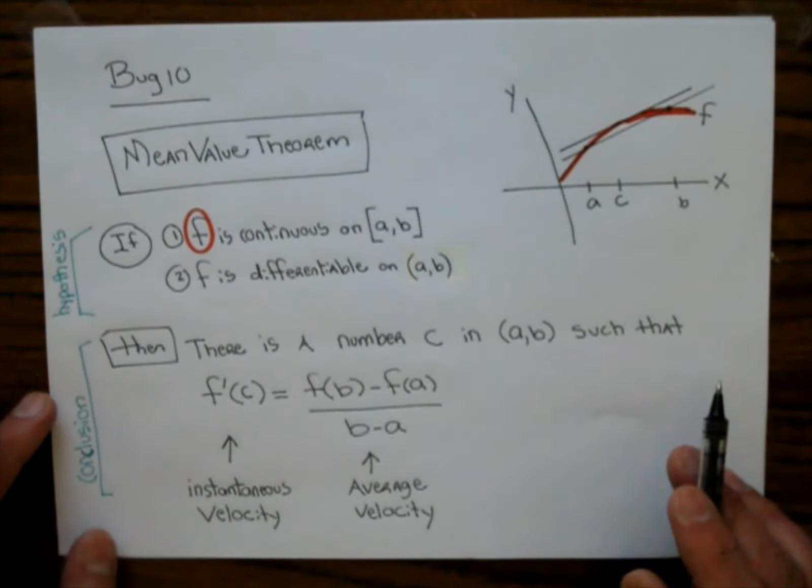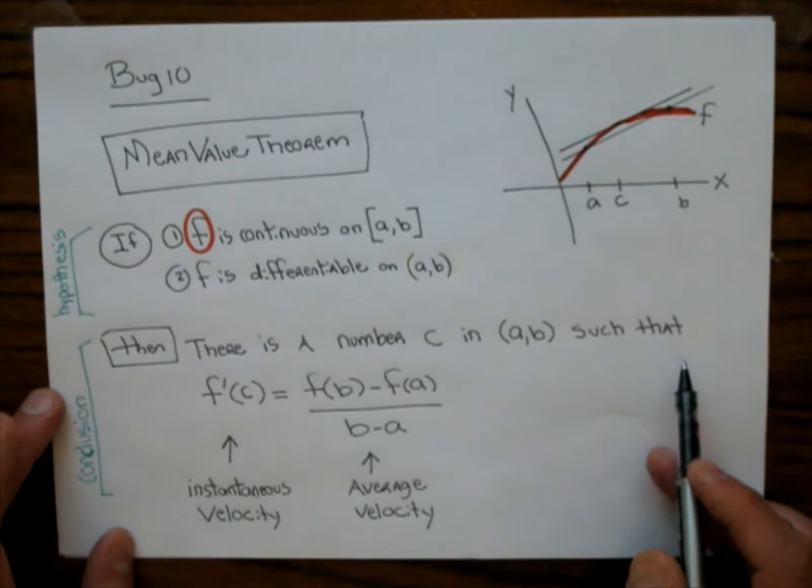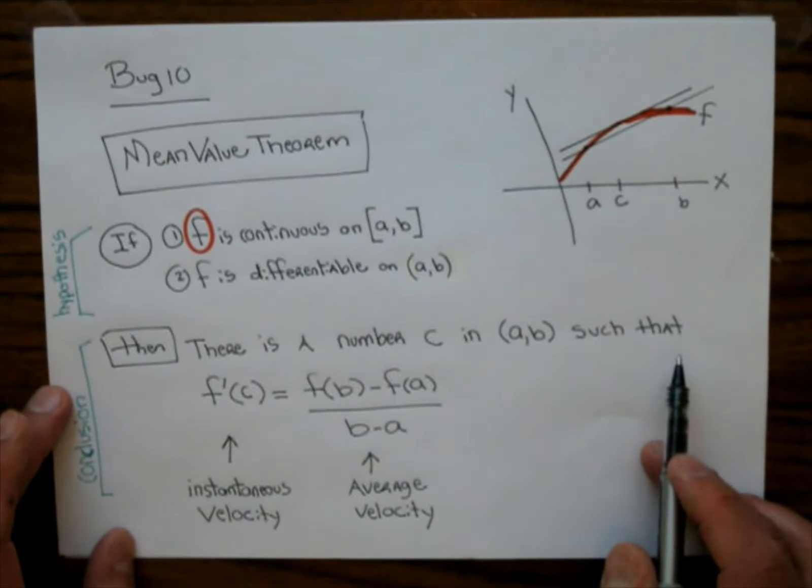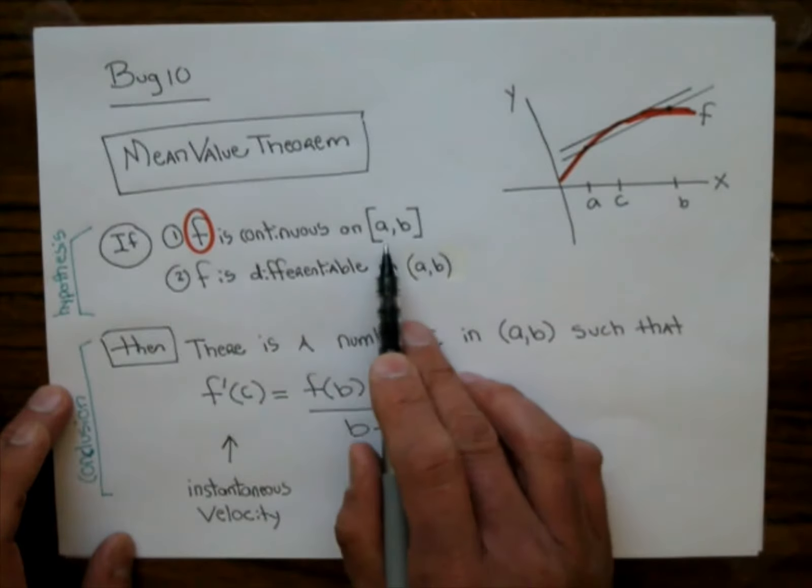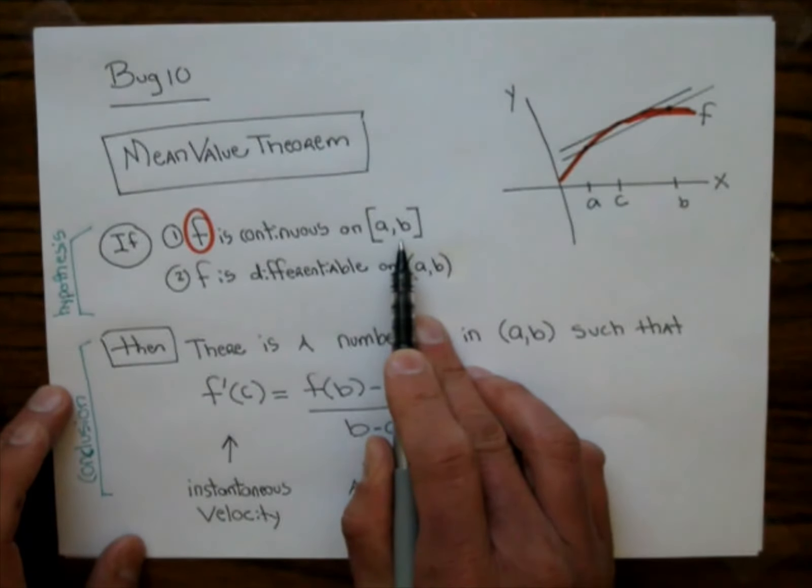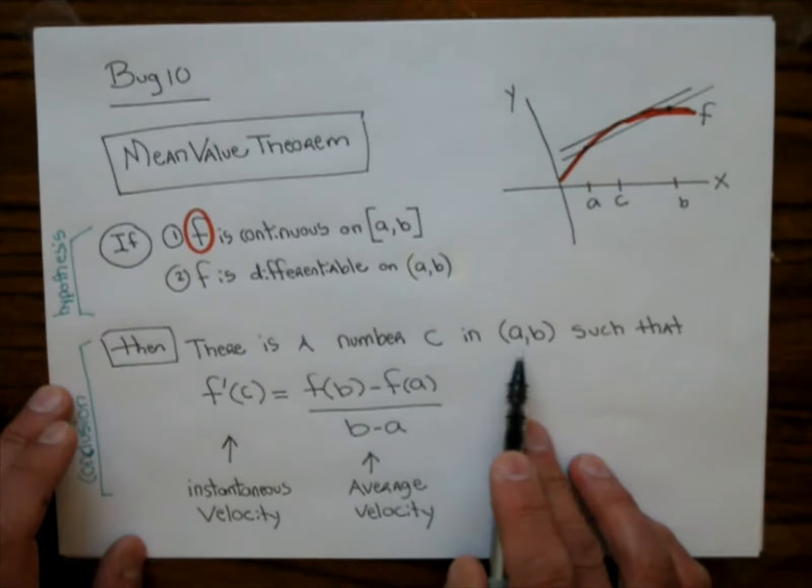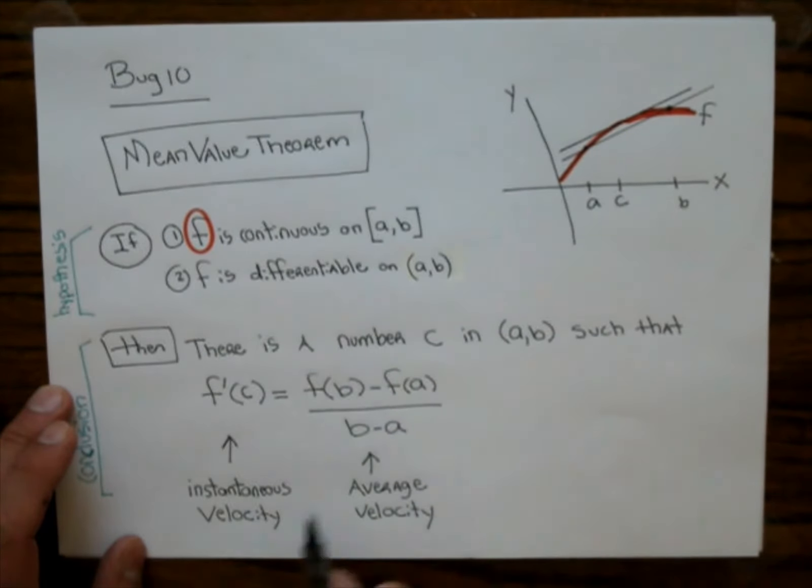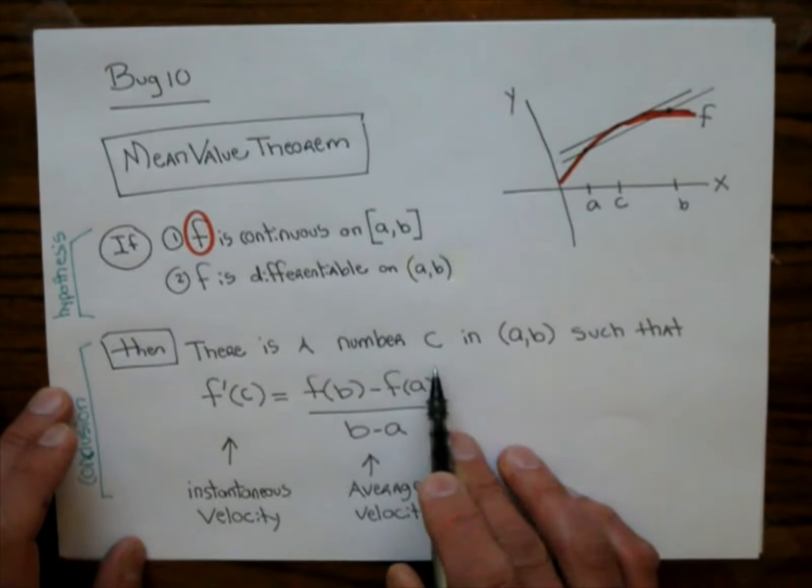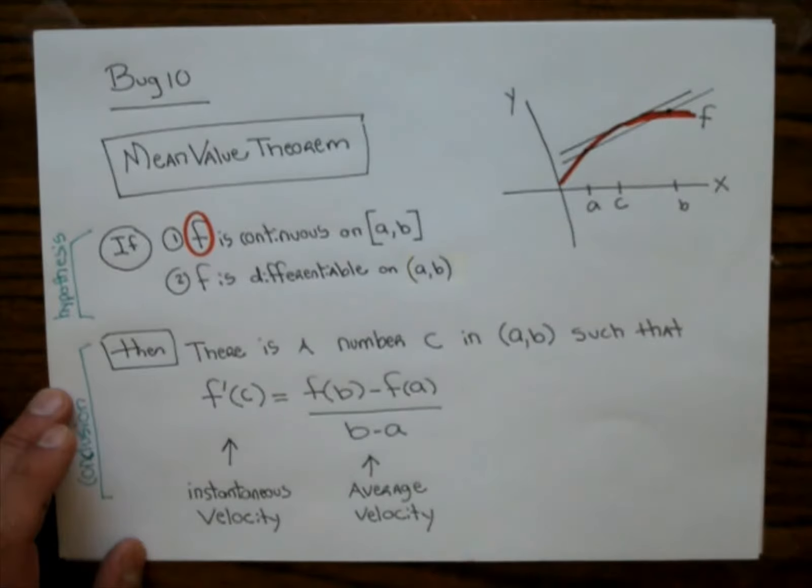In terms of the bug, you've got a function that describes the position of the bug, and you have a time interval a, b. It's saying that time interval has an average velocity. They're saying that you can find a time within the time interval such that the instantaneous velocity equals the average velocity. And there could actually be more than one time within the time interval where that happens.